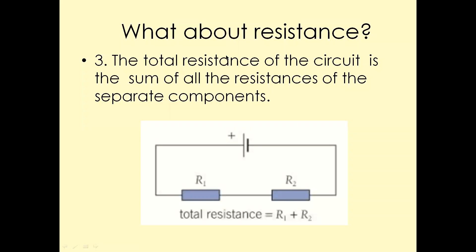The next thing we're going to look at is resistance. The symbol for resistance is R. Resistance is the property of a substance or material to stop the flow of electrons. When electrons flow through a wire, they collide with the atoms of the metal. Those atoms or ions try to stop the flow of electrons, and that is what we call resistance.